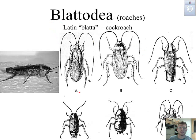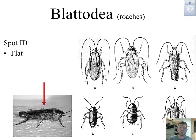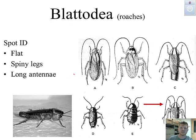Next is Blattodea — these are the roaches. 'Blatta' in Latin refers to cockroach. Pretty easy to identify. Some things to look for are the flat body — 'Blat' kind of reminds us of flat, which can help us remember them. We also want to look for the spiny legs, and many of them are going to have long antennae. So, cockroaches: Blattodea.